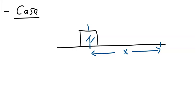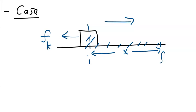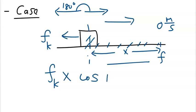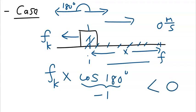For negative work: suppose friction acts on an object as it moves to the right. Kinetic friction acts leftward — opposite to motion. As the object moves to the final point and comes to rest, the displacement is to the right but friction points left, so the angle between them is 180°. Since cos 180° = −1, the work done by kinetic friction is negative.